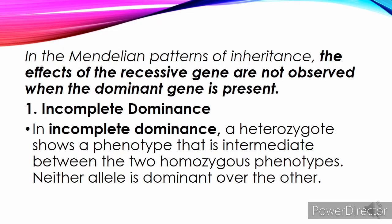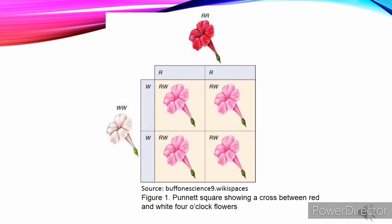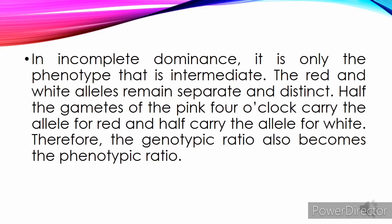Incomplete dominance: In incomplete dominance, a heterozygote shows a phenotype that is intermediate between the two homozygous phenotypes. Neither allele is dominant over the other. An example of incomplete dominance is flower color in the 4 o'clock plant. When a pure red-flowered 4 o'clock plant is crossed with a pure white-flowered 4 o'clock plant, the offspring will produce neither red nor white flowers. Instead, all flowers will be pink, as shown in Figure 1, a Punnett square showing a cross between red and white 4 o'clock flowers.